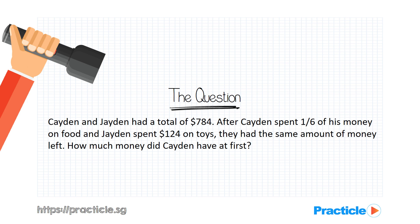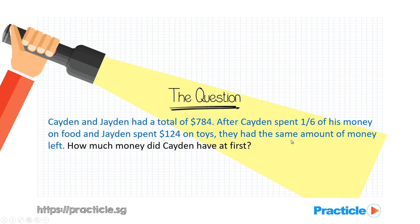Let's read this question together. Caden and Jayden had a total of $784. After Caden spent one-sixth of his money on food, and Jayden spent $124 on toys, they had the same amount of money left. We're asked to find the amount of money that Caden had at first.